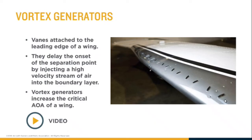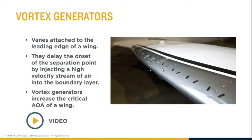The opposite approach uses vortex generators: small devices that create a vortex — like a tornado of air spiraling backwards — that adds energy to the layer of air on top of the wing, keeping it attached further back and delaying the separation point. This allows that part of the wing to reach a higher critical angle of attack before stalling. Placing vortex generators in front of the ailerons keeps them effective even as the root stalls. Sometimes manufacturers place them along the entire leading edge, but then wing washout or another method is still needed to ensure the root stalls first.